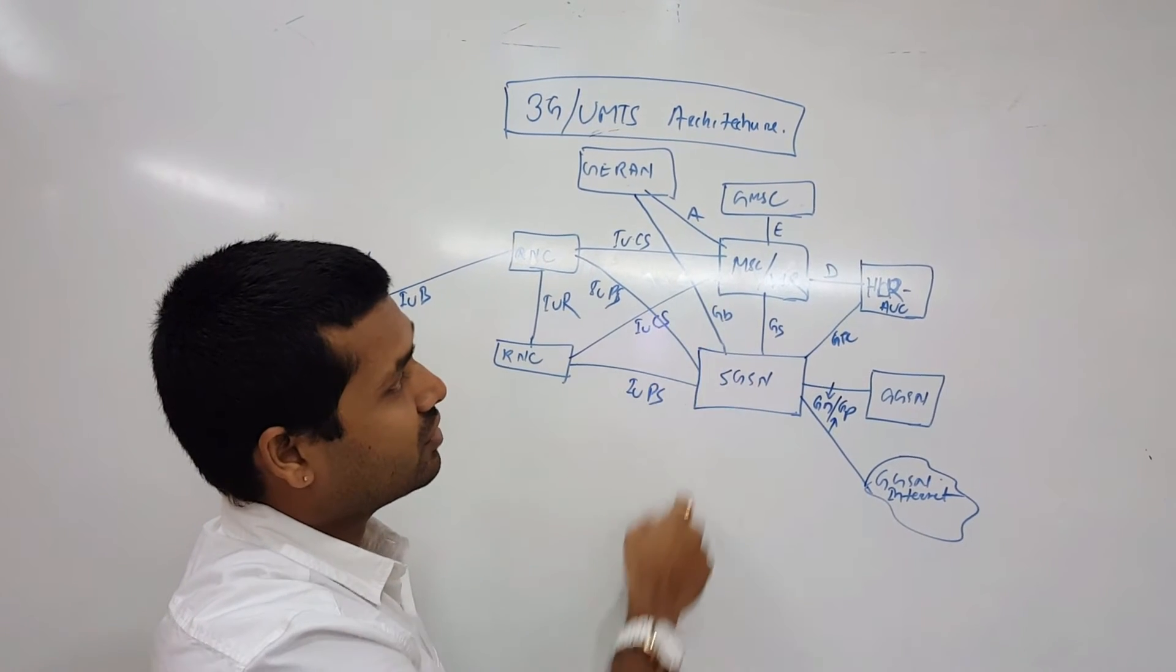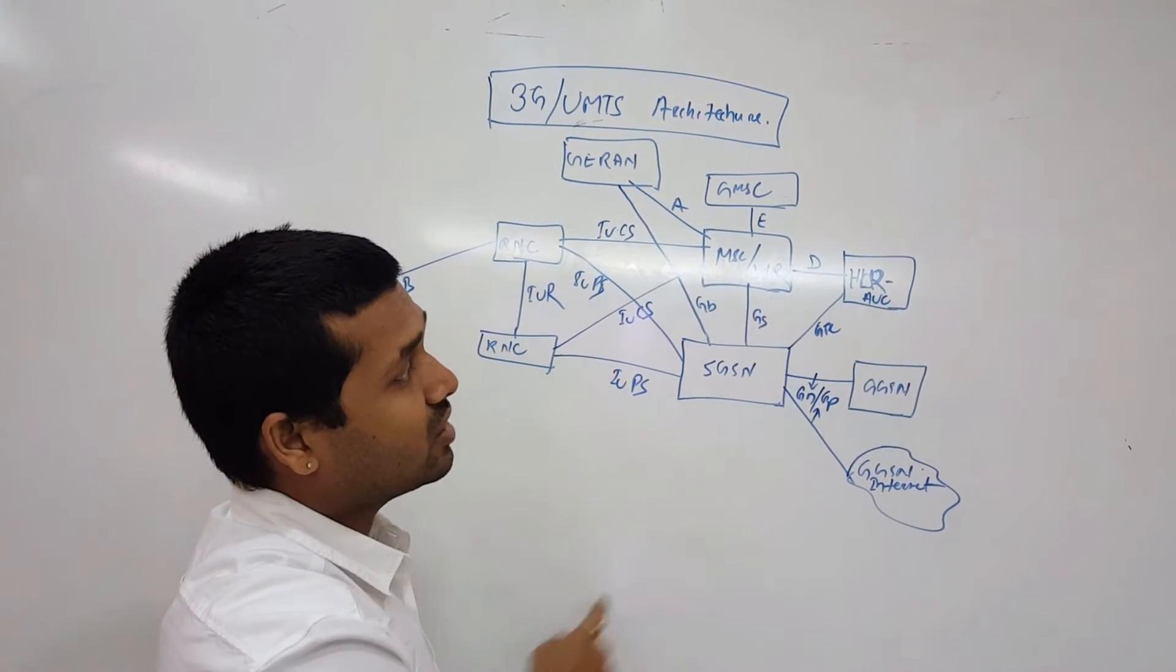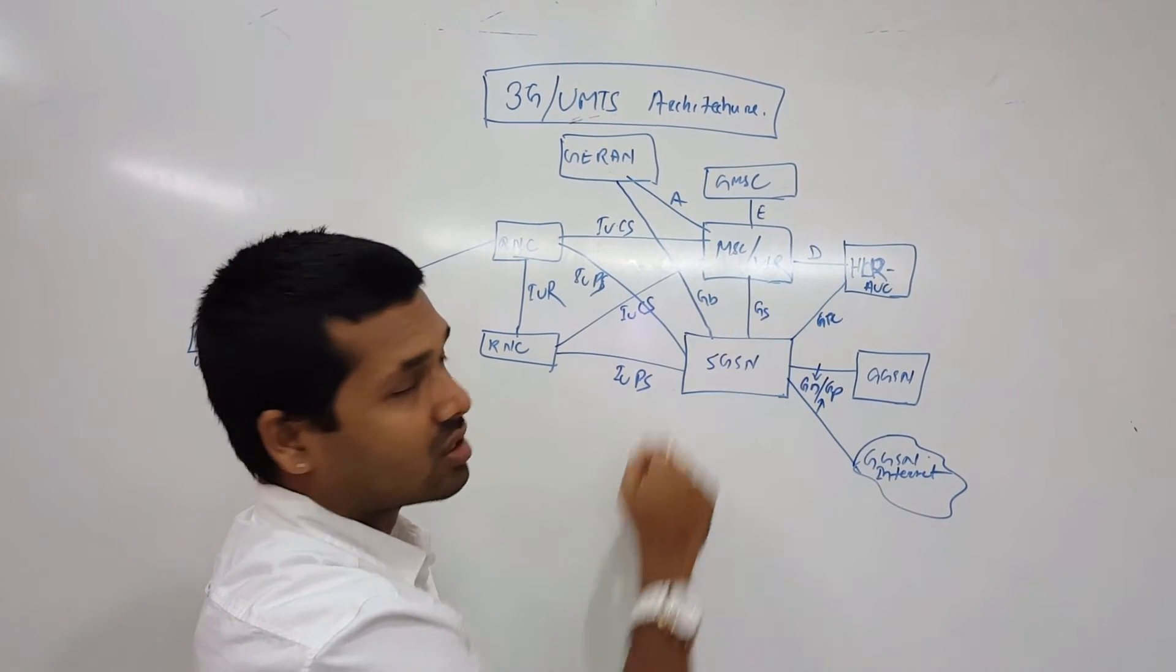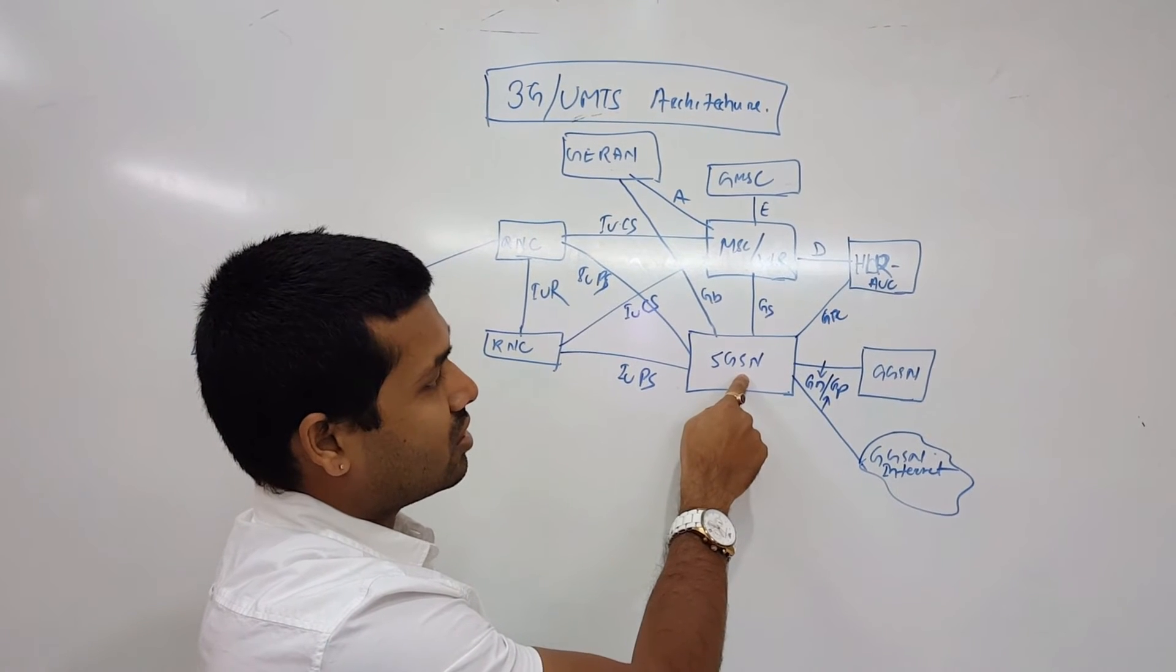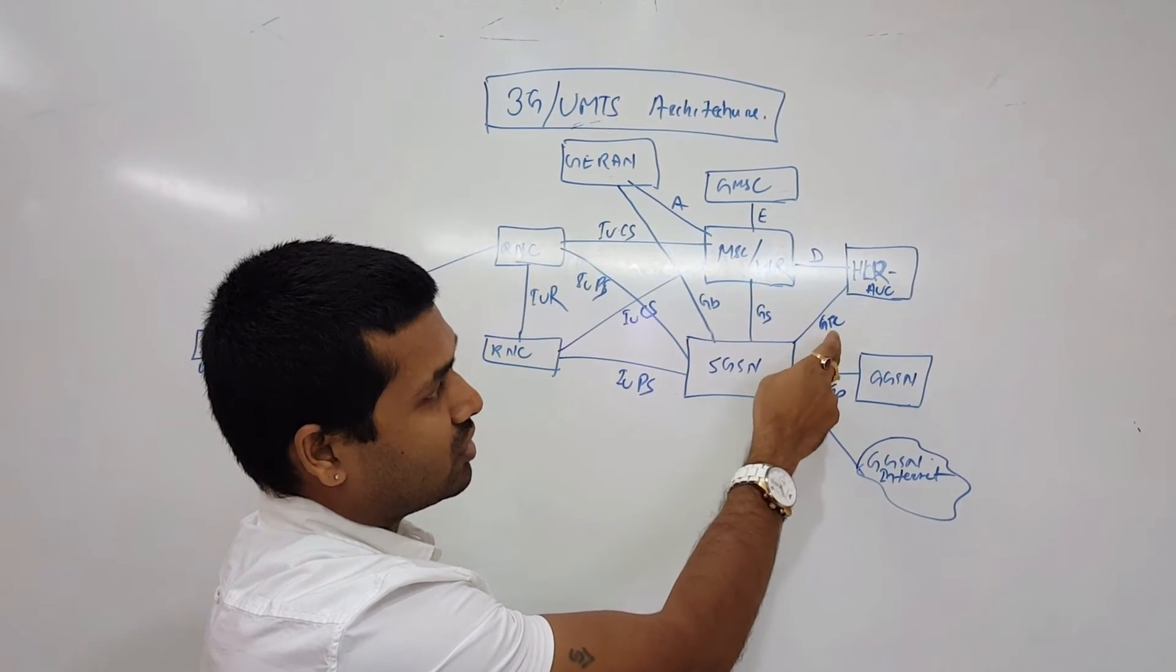Then we are having from MSC to GMSC, the E interface. From MSC or VLR to HLR authentication, we are having D interface. From SGSN we are having GS interface towards MSC and VLR. From SGSN to HLR or AMC we are having GR.